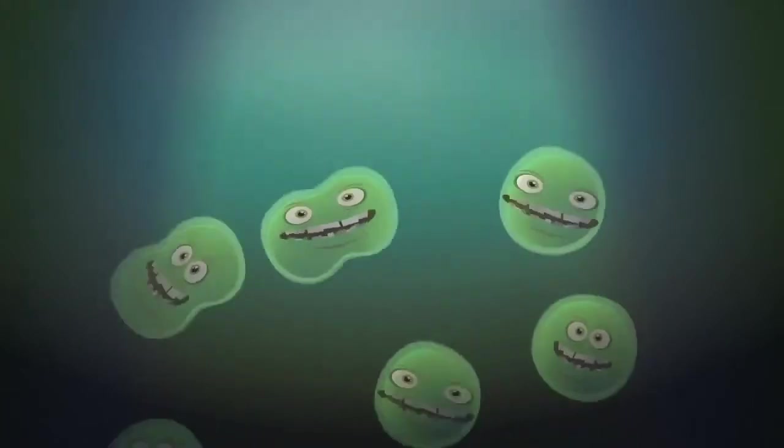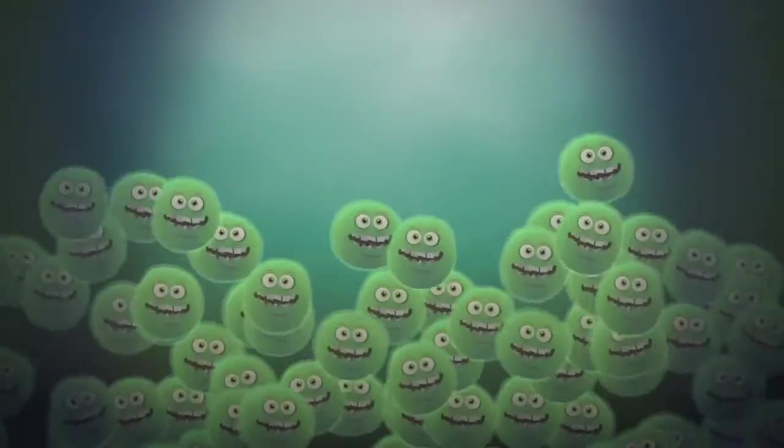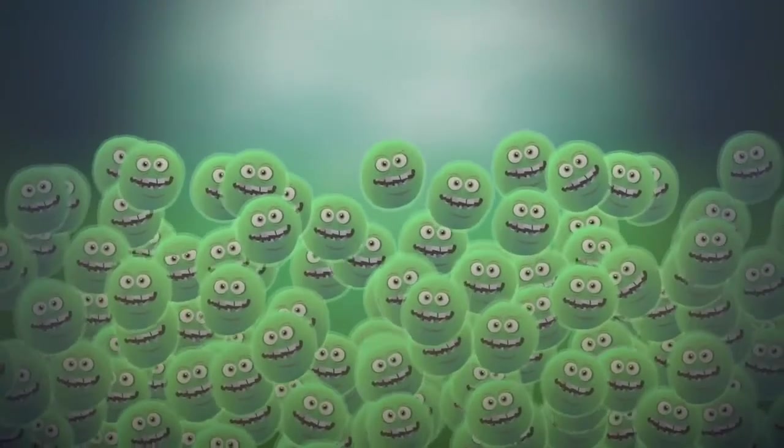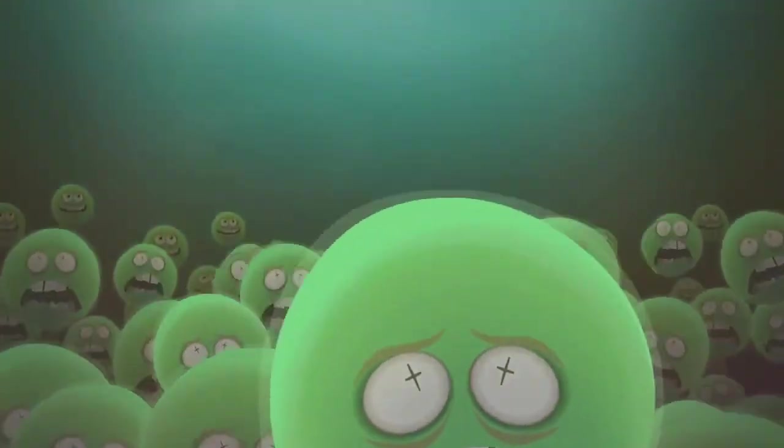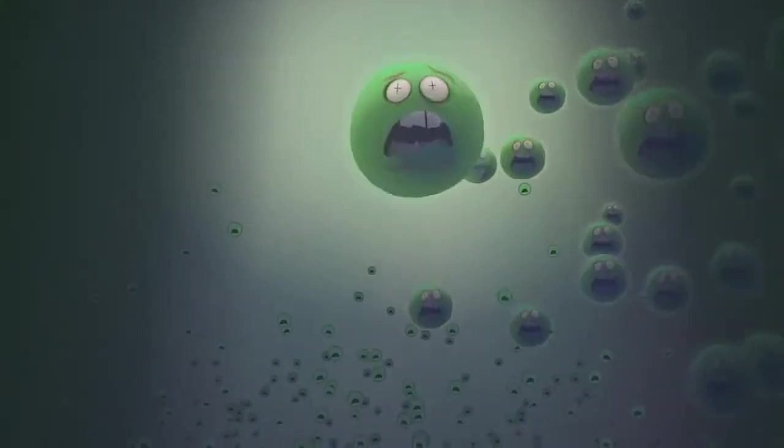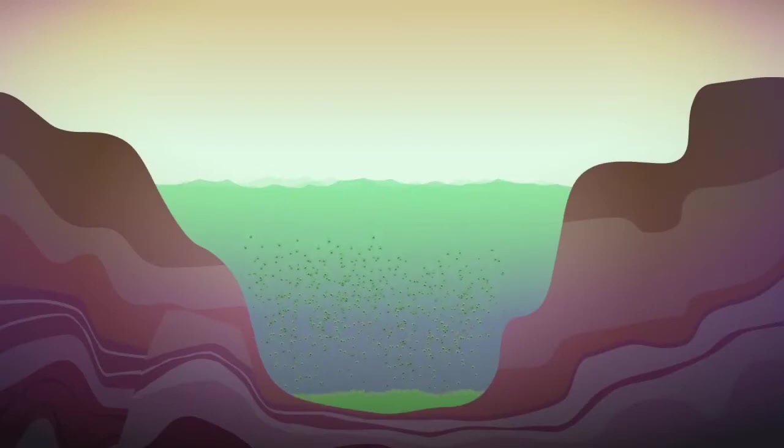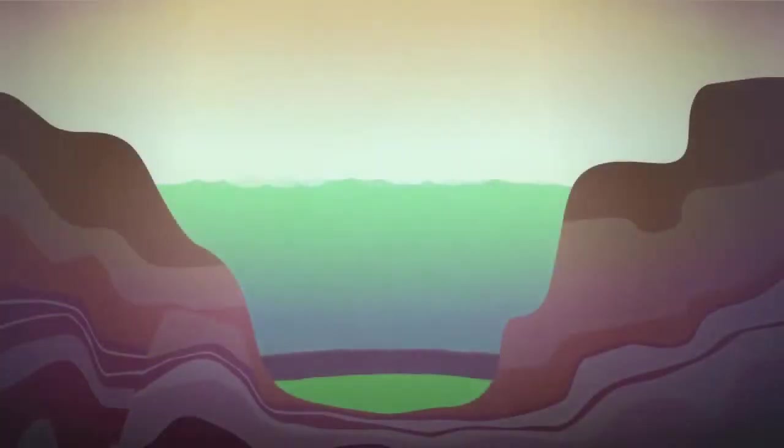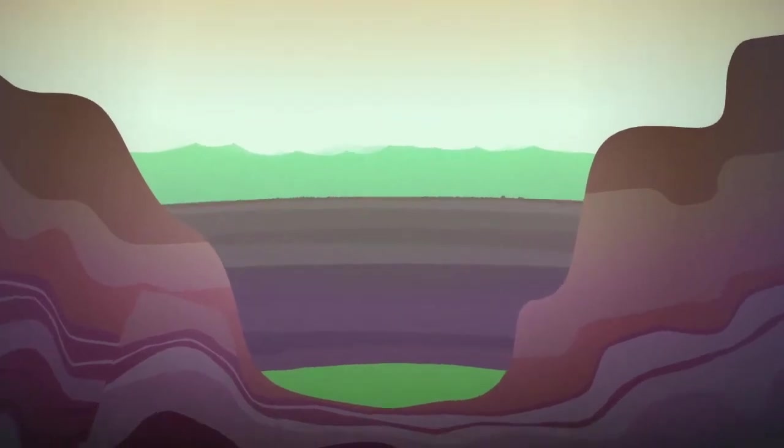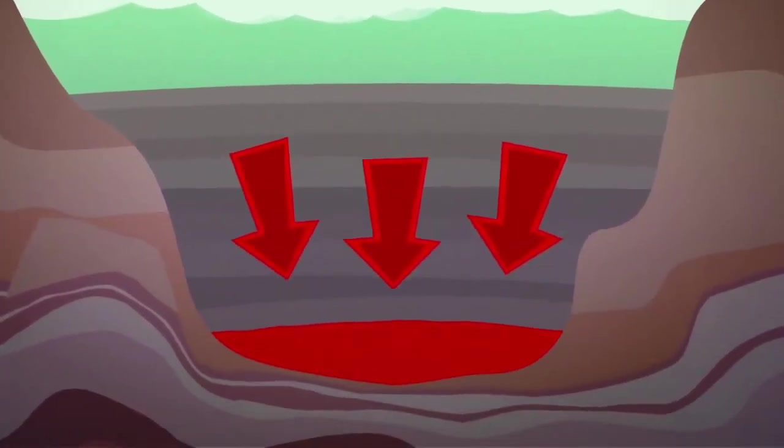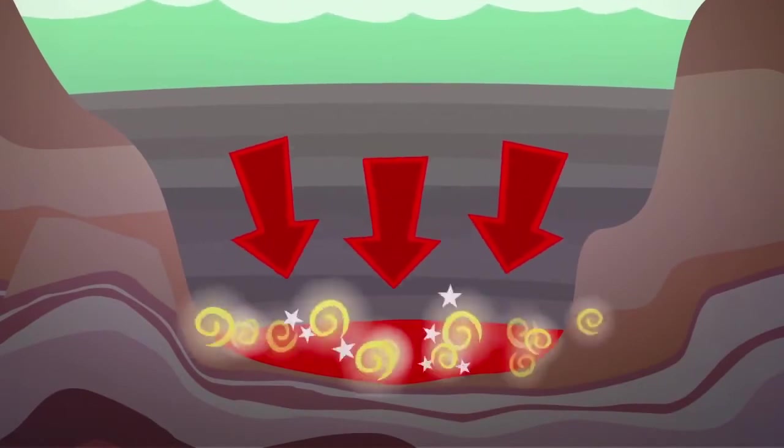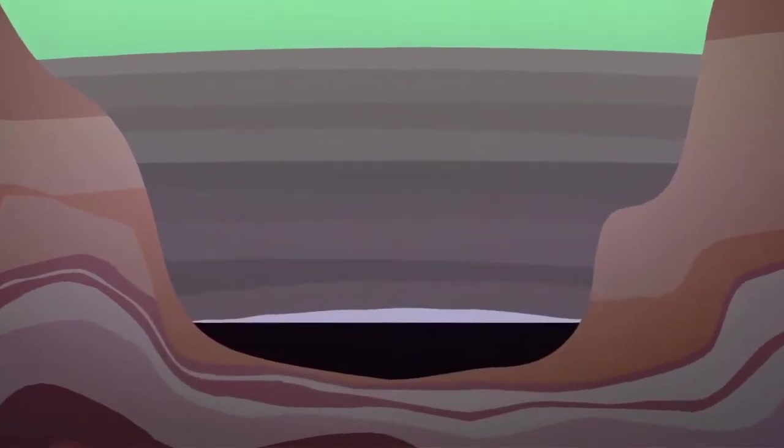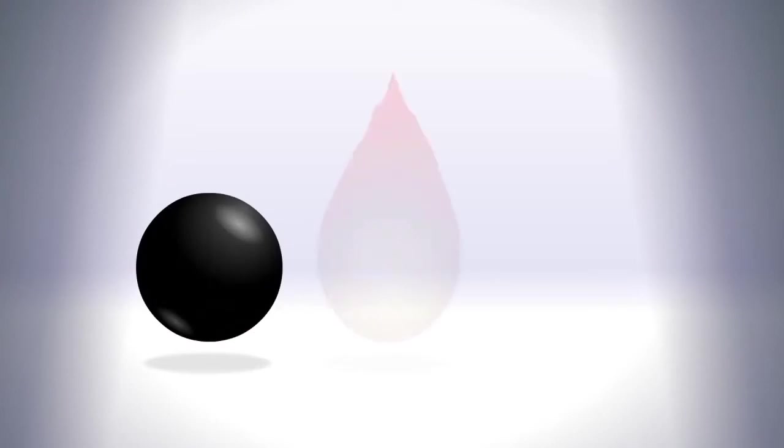Algae thrived in the extreme heat, poisoning the water. They died and fell in their trillions to the bottom of the rifts. Rivers washed sediment into the seas, until the organic remains of the algae were buried. As the pressure grew, so did the heat, until a chemical reaction transformed the organics into hydrocarbon fossil fuels, oil and natural gas.